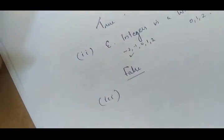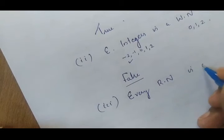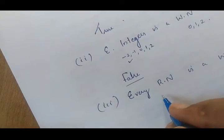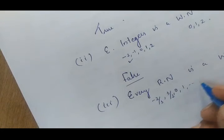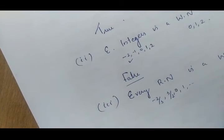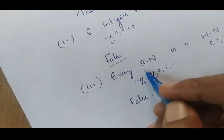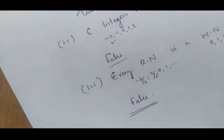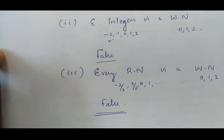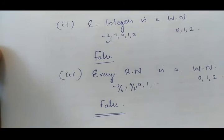Third statement: every rational number is a whole number. Rational numbers consist of all ratios such as minus 2 by 3, 3 by 2, 0, 1 etc. Whole numbers consist of only values from 0, 1, 2 etc. So this statement is false, because rational numbers consist of fractions and whole numbers do not contain values like that. Today we discussed about rational numbers and their features, including how to find rational numbers between two values.